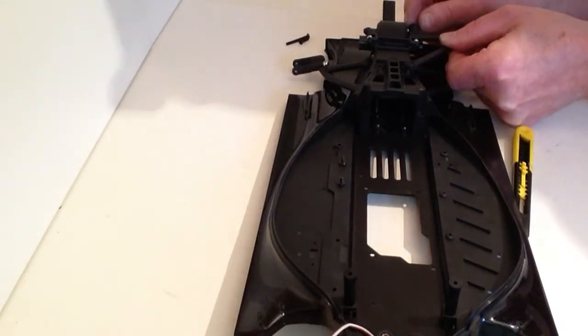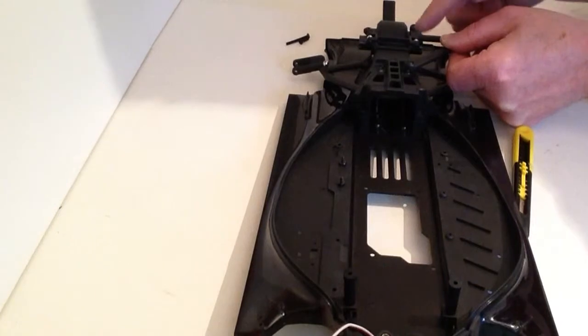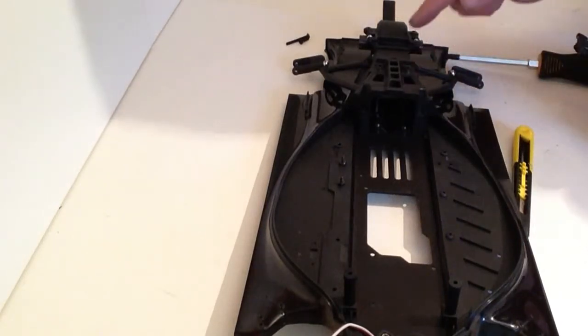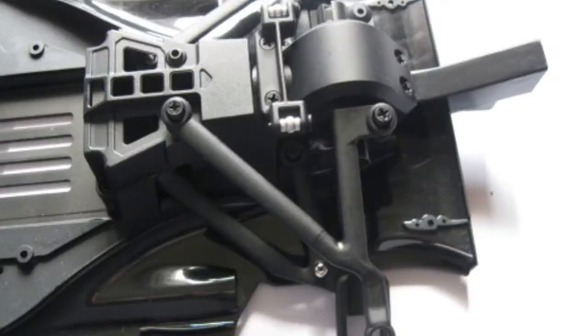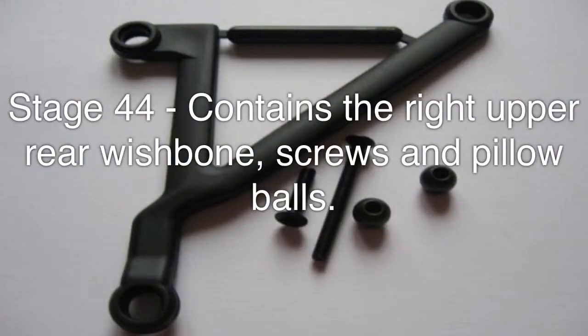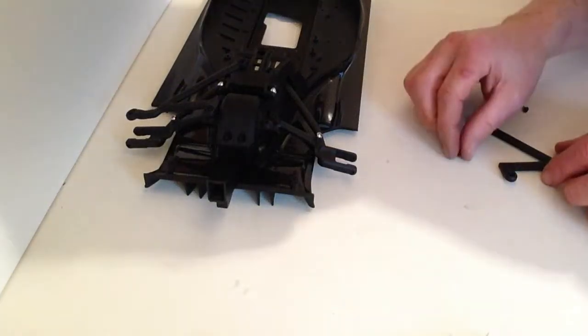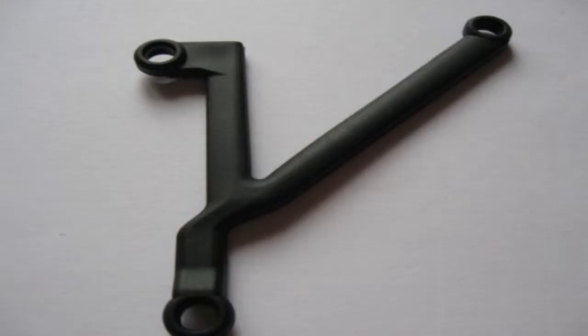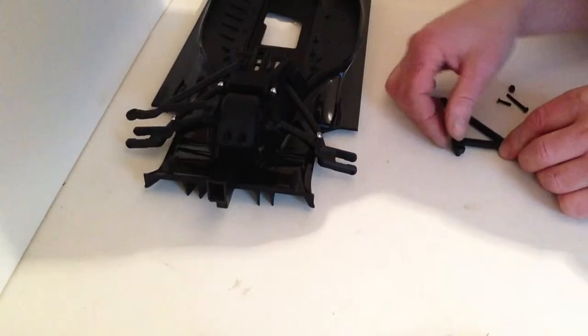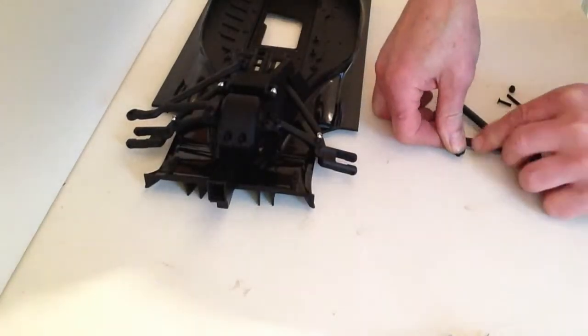The arm goes on the lower section just here where these two locations are. For this stage we're going to take the right rear upper arm assembly and pop.